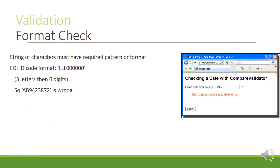I'm going to go through about five different validation techniques. A format check is when a string of characters must have a required pattern or format. For example, an ID code could be three letters and six digits. We would know immediately that AB9423872 is wrong because it starts with two letters instead of three.